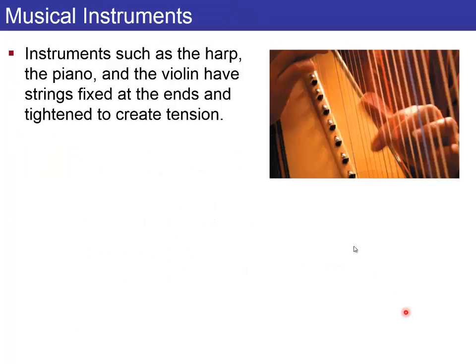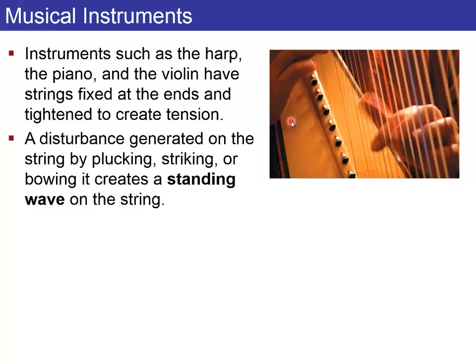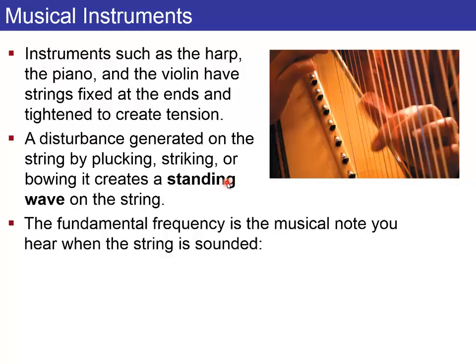So musical instruments, such as the harp, the piano, and the violin, all have strings that are fixed at two ends and tightened to create a tension. And any disturbance will create a standing wave on a string. And the fundamental frequency is the musical note that you hear, which is the speed, which is here the tension of the string divided by mu, the mass density of the spring, square root, and then times one over 2L.